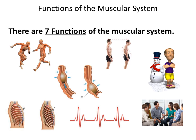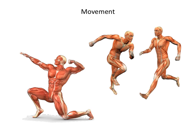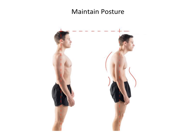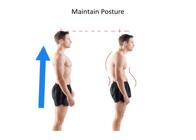Next, we'll discuss the seven functions of the muscular system. The first function is movement. When coupled with the skeletal system, the muscular system will promote movement and locomotion. The second function of the muscular system is to maintain posture. Muscles of the back, specifically the lower back, are constantly under contraction to maintain the body's upright and erect position.